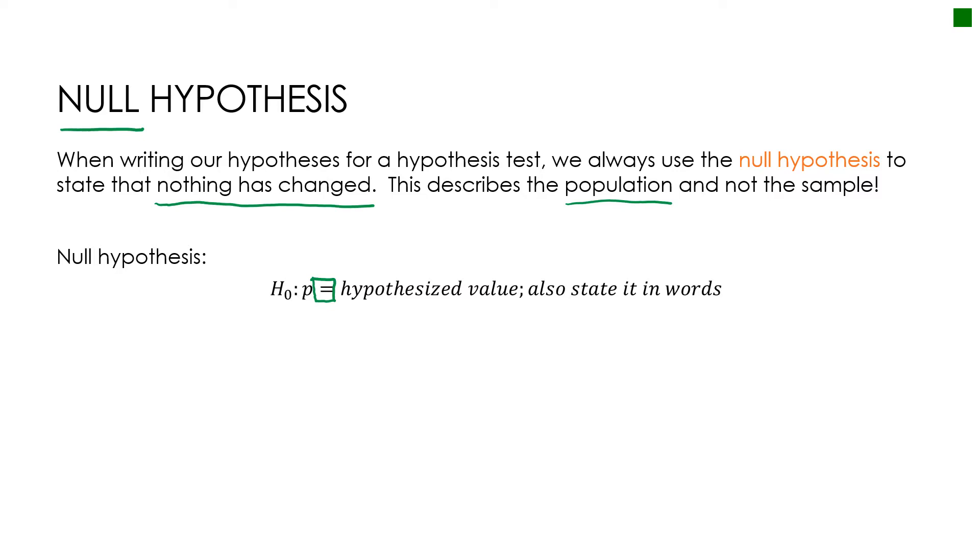That means our null hypothesis is going to be—and I'll show you step by step how we would write it—H sub zero. The zero tells me it's the null hypothesis. Then I would use p, because this is a proportions question, and then equals and then whatever we assumed it to be, which was 20% because that's what we had had before.